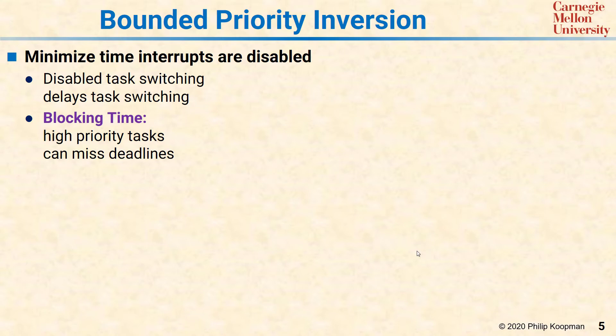The simplest heuristic here is to minimize the time interrupts are disabled, and if you're not using mutexes, that's all you need to do. The issue is that the reason disabling interrupts works is it turns off the task switcher, and if you can't switch tasks, then you don't have a concurrency problem. But the time when the task switcher is disabled is blocking time, because if you have a higher priority interrupt or higher priority task, it has to wait until you're done even if you're a very low priority task that's disabled interrupts.